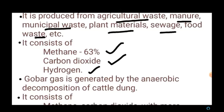Methane in biogas is produced by methane-producing bacteria called methanogens. Biogas is devoid of smell and burns with a blue flame without any smoke. The methanogens also produce anaerobic sludge, which is used as a fertilizer. Methanogens are also present in the rumen of cattle because cattle feed on plants and the plants are made up of cellulose, which requires these methane-producing bacteria to digest.